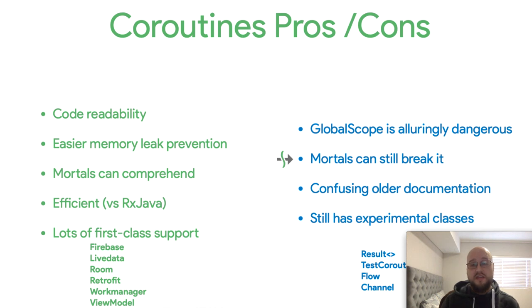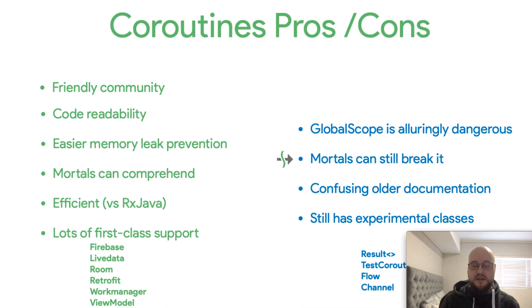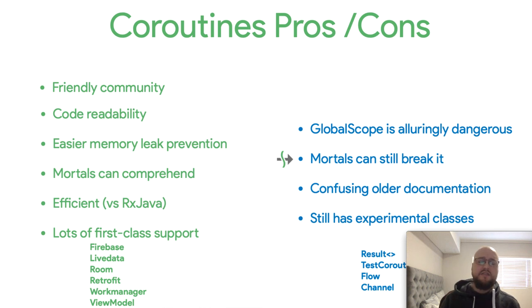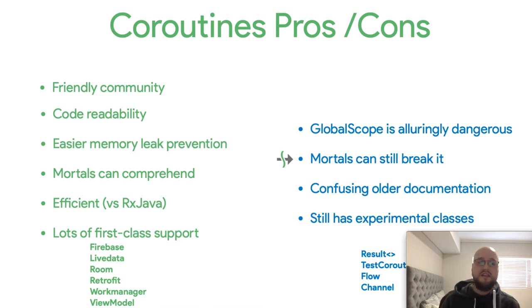If you're unsure about any of these experimental classes, there's a very friendly community — the Kotlin community and the Kotlin Slack channel, which anyone can join. You can ask questions about coroutines. For simple questions they'll redirect you to Stack Overflow or the documentation, but for anything outside the normal, the people who are literally writing these classes are likely to jump in and respond. They're very active.